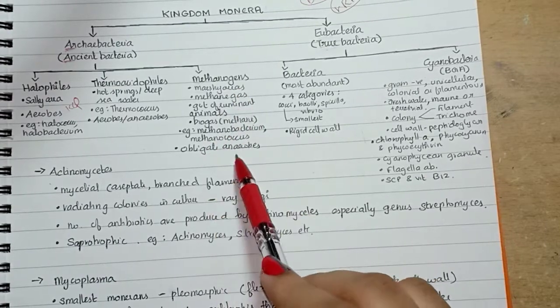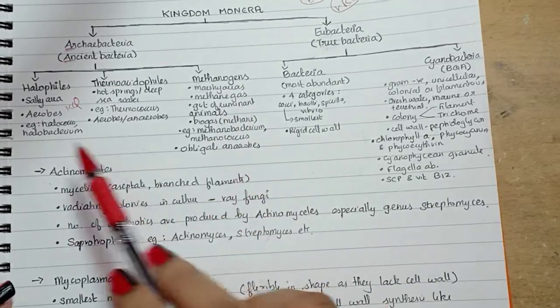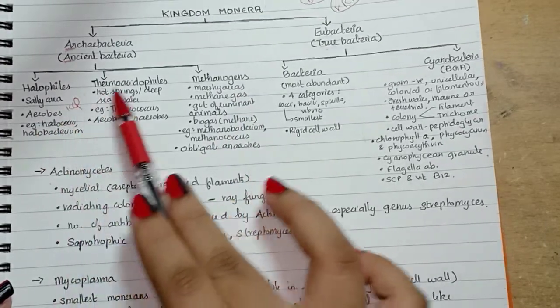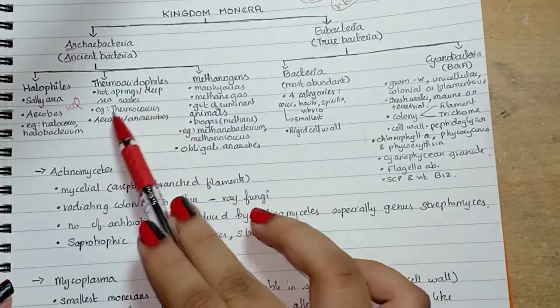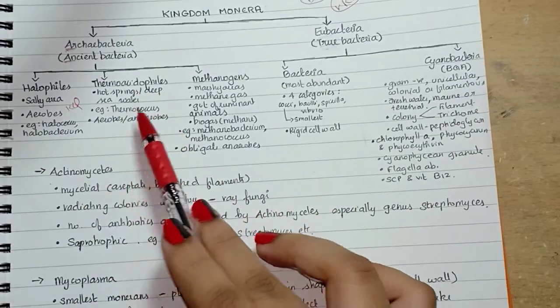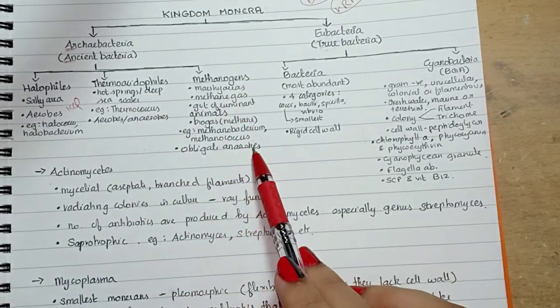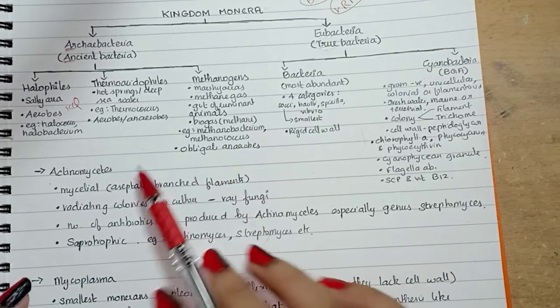Methanogens are obligate anaerobes. So to summarize: halophiles are aerobes, thermoacidophiles can be aerobes or anaerobes, and methanogens are obligate anaerobes.